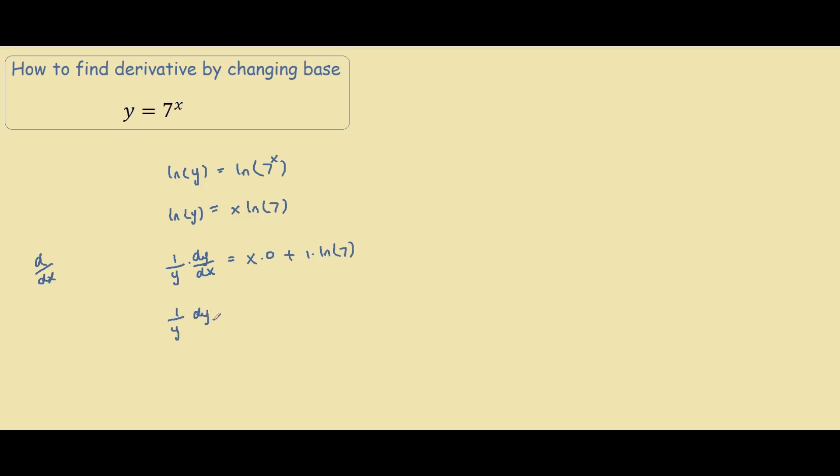Simplifying this down, we have x times 0 is 0, ignore that. 1 times ln of 7 is ln of 7.